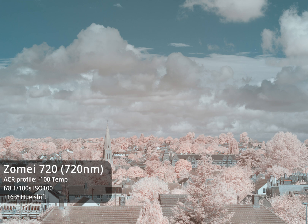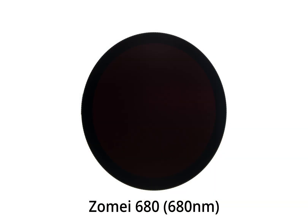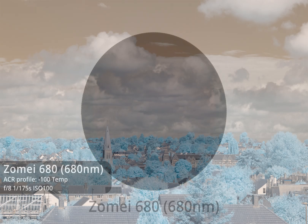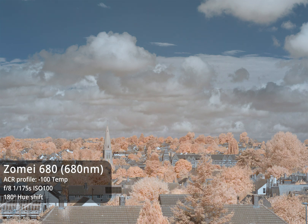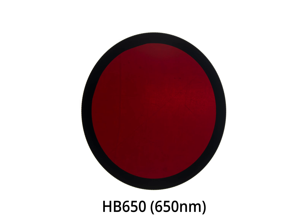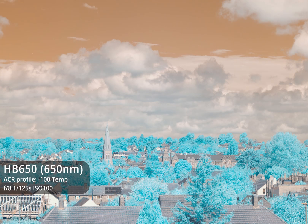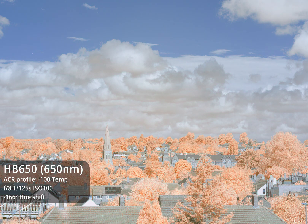Adding a 163-degree hue shift to the 720nm image gives us a blue sky and slightly pinky-orange foliage. With the Zomei 680nm filter, which passes some red light as well as infrared, we get a more colourful image. Swapping the red and blue channels gives a blue sky with yellow foliage, or a 180-degree hue shift gives a blue sky with orange foliage. Moving to the HB650 filter, which lets through light starting at 650nm, a 146-degree hue shift gives pink foliage and a teal sky, or a minus 166-degree hue shift gives blue sky and orange foliage.